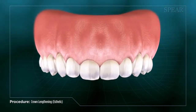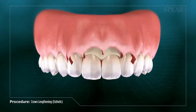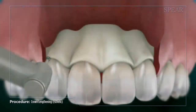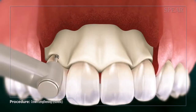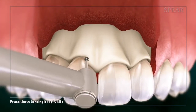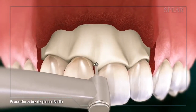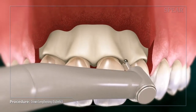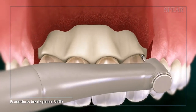This procedure involves your doctor accessing the area below the gum line and increasing the amount of tooth material exposed, usually by modifying the surrounding bone and tissue, effectively lengthening the tooth.